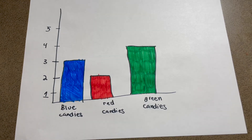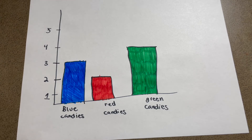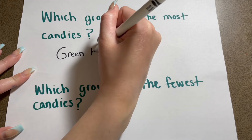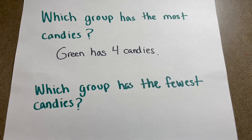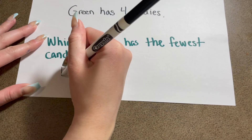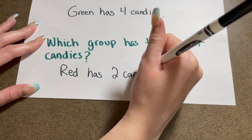That's what our graph should look like when we're done. Now we're going to answer some questions about it — pause if you need to look at it a little longer. The first question is: which group has the most candies? Green! And how many candies do they have? Four! So we write: green has four candies. Now the next question: which group has the fewest candies? Red! And how many does red have? Two! So we write: red has two candies.